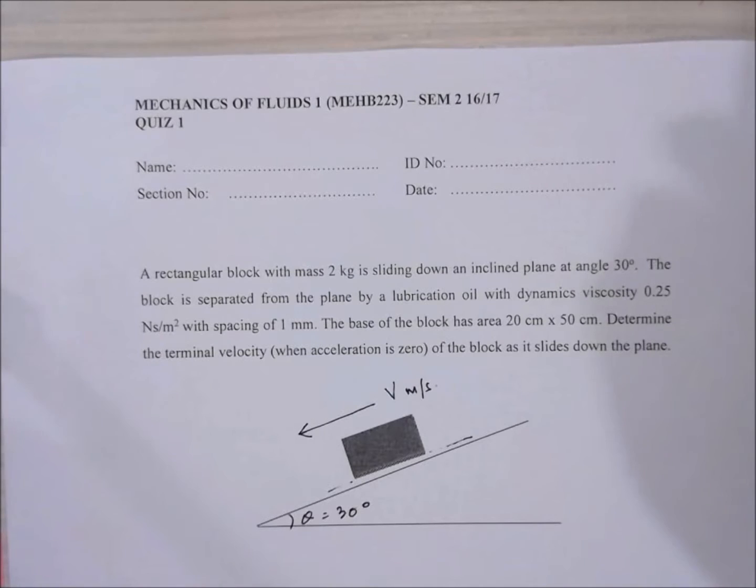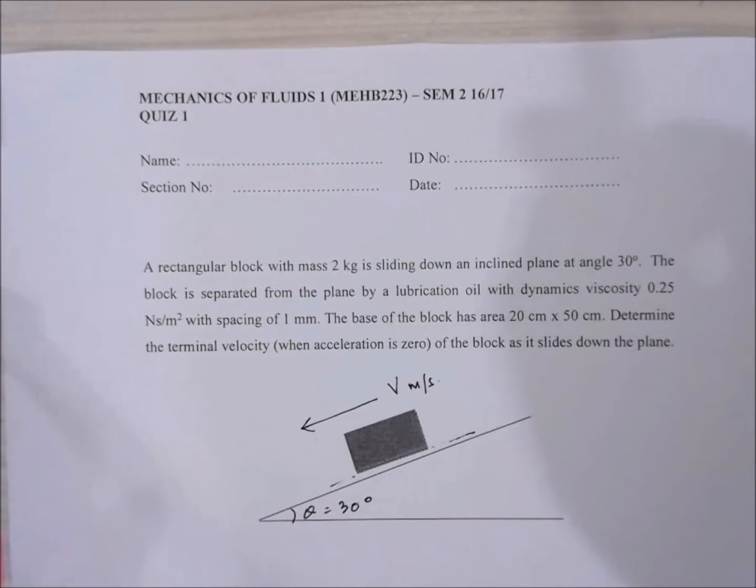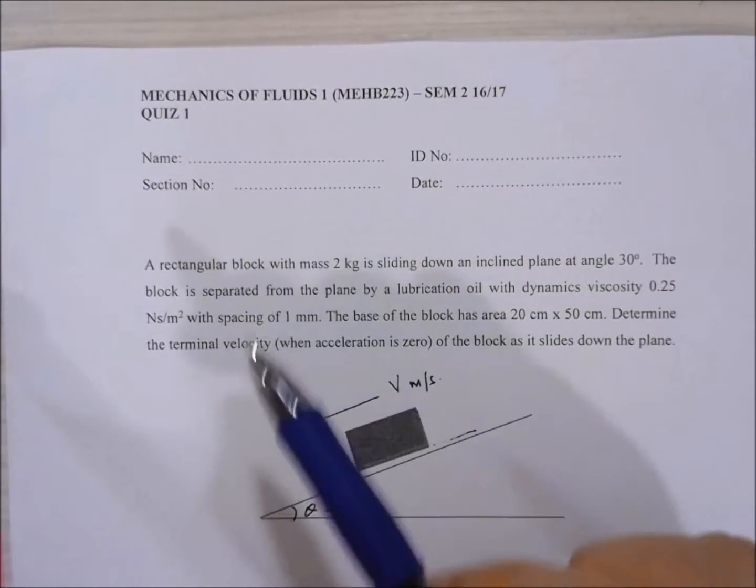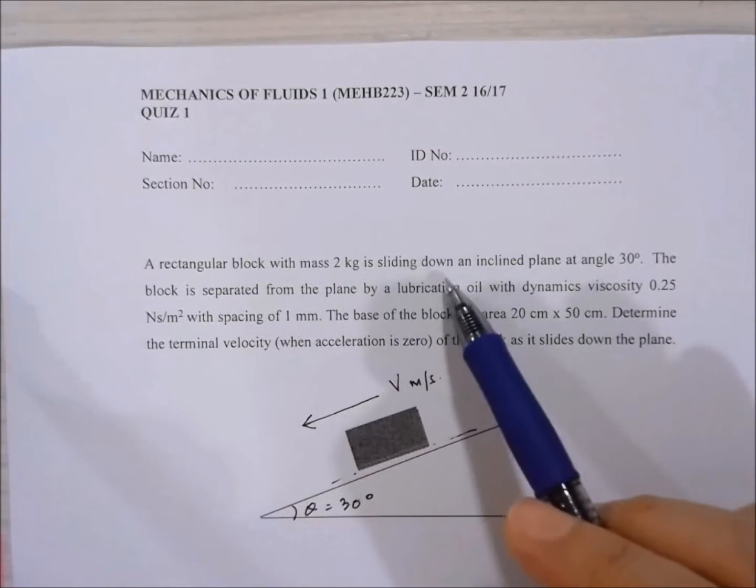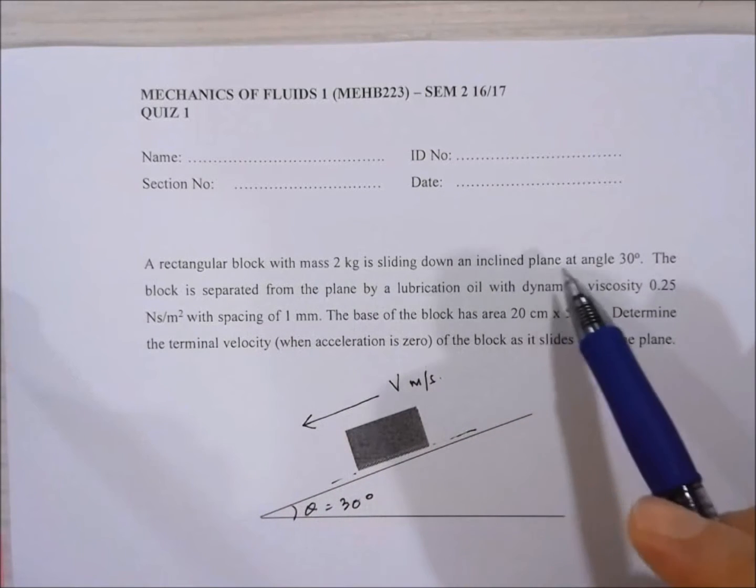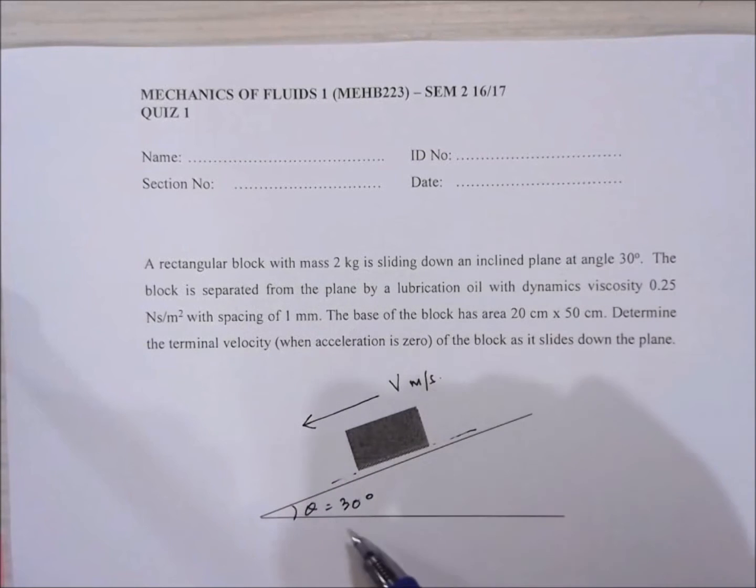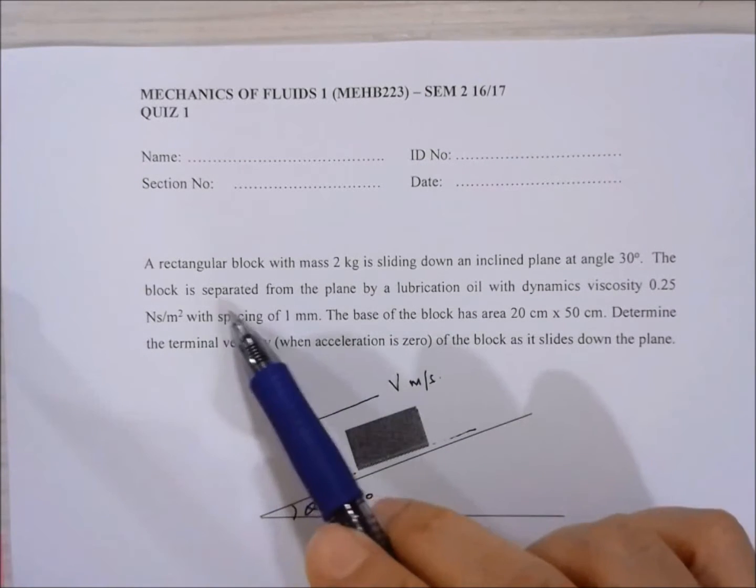This question is related to viscosity in moving fluid. We have a rectangular block with a mass of 2 kg sliding down an inclined plane, and the plane is at an angle of 30 degrees to the horizontal.